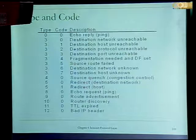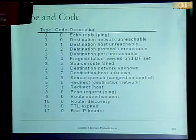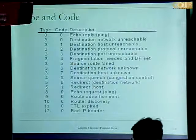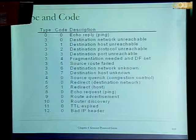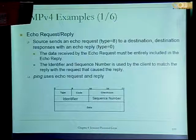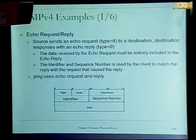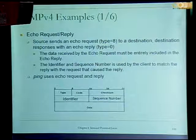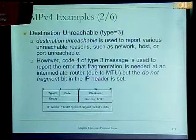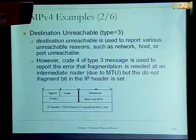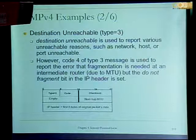All these messages are mostly used when you are processing a packet at a host or at a router and you encounter some errors, and you need to notify the source of the packet. For example, echo request and echo reply — this is done by ping, which uses ICMP echo request and reply to implement. Another example is destination unreachable, which is used to report various unreachable reasons such as network, host, or port unreachable.